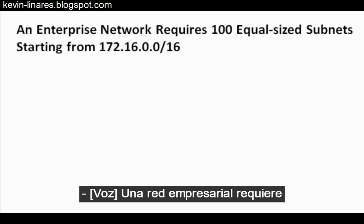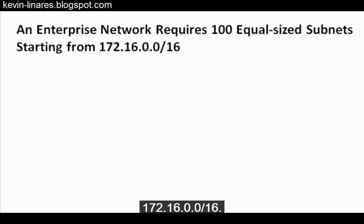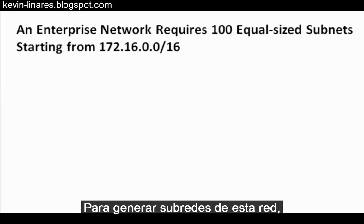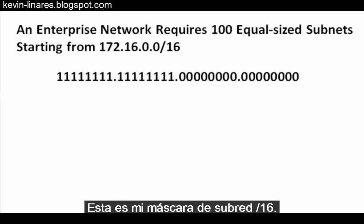An enterprise network requires 100 equal-sized subnets starting from 172.16.0.0/16. To subnet this network correctly, the first thing that I do is write out the subnet mask. There's my slash 16 subnet mask.